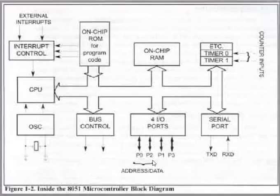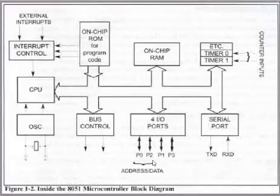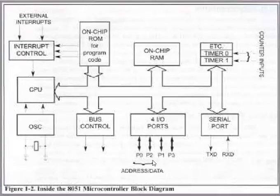Most embedded systems are built on microcontrollers nowadays, which run faster than a custom-built setup with a microprocessor because all components are integrated within a single chip. One disadvantage of microprocessors is that since all components are externally connected, it increases the circuit area. In a microcontroller, all components are inbuilt, so it consumes less circuit area. Also, since components are inside the chip, the execution time of any instruction is very low.